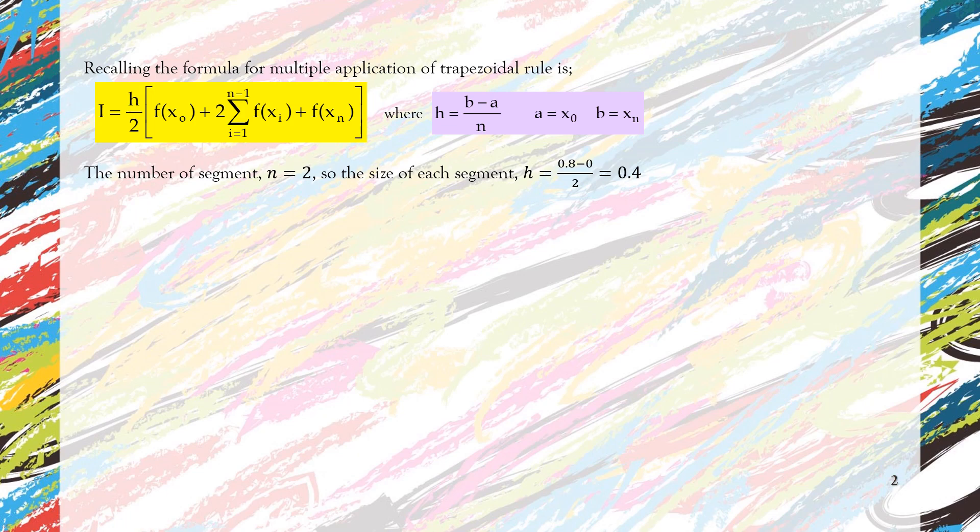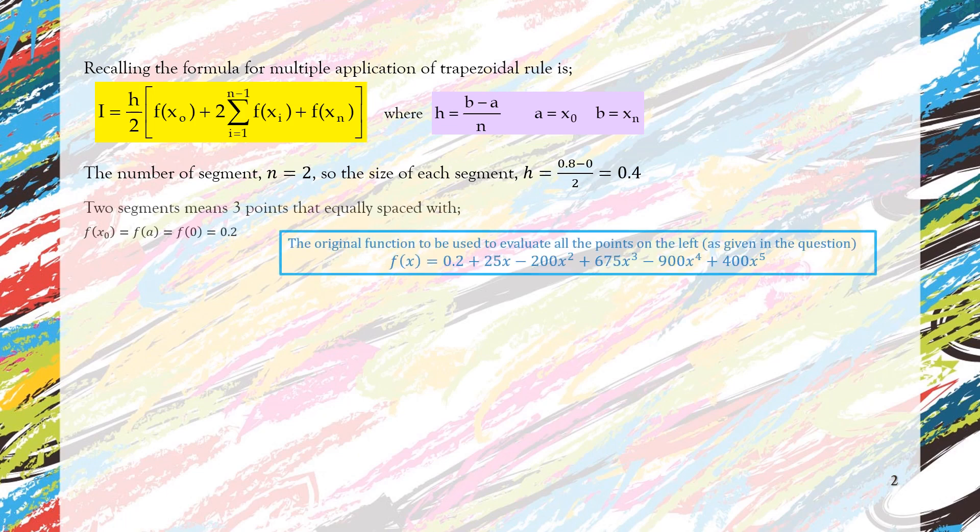So the size shows that we have two equally spaced segments, which means we have three points that are equally spaced.